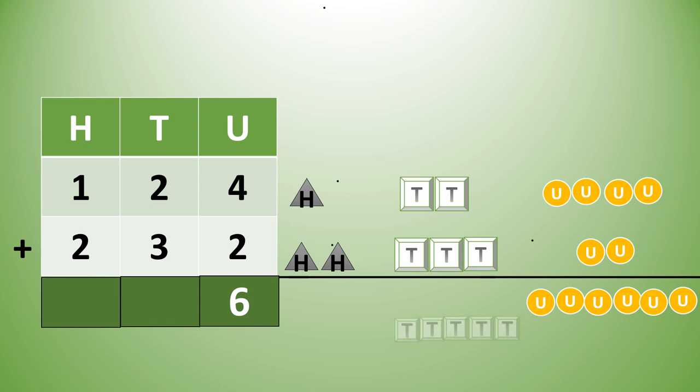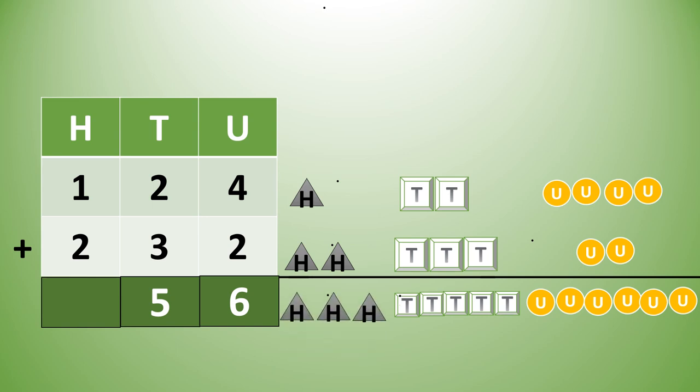We draw 6 units and also write the number 6. 2 tens plus 3 tens will give us 5 tens — we draw 5 tens and write 5. 1 hundred plus 2 hundreds will give 3 hundreds — draw 3 hundreds and write 3. So 124 plus 232 is equal to 356.